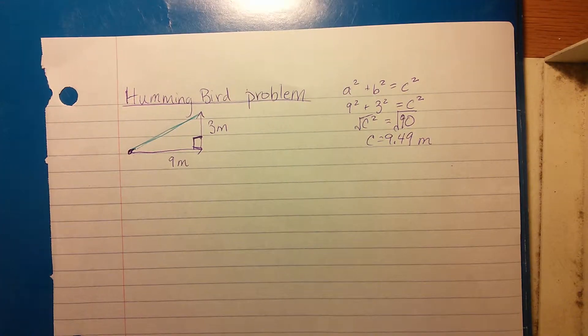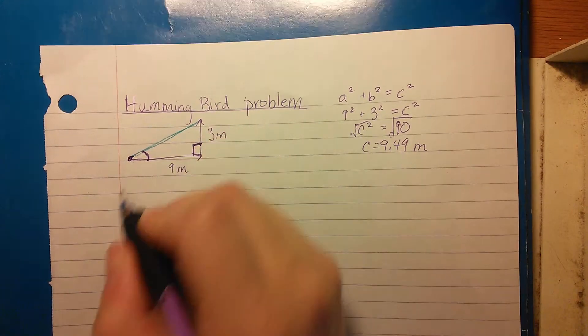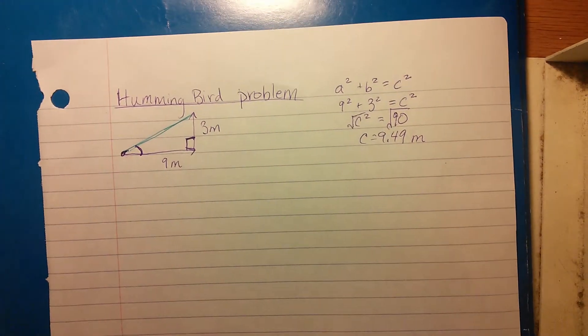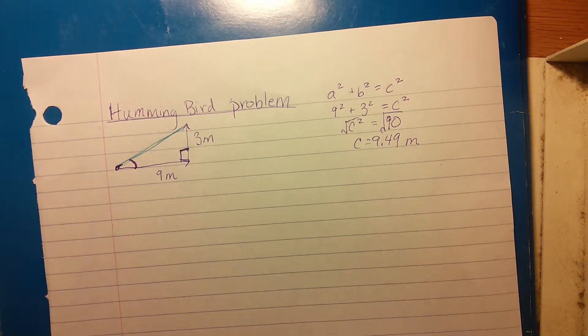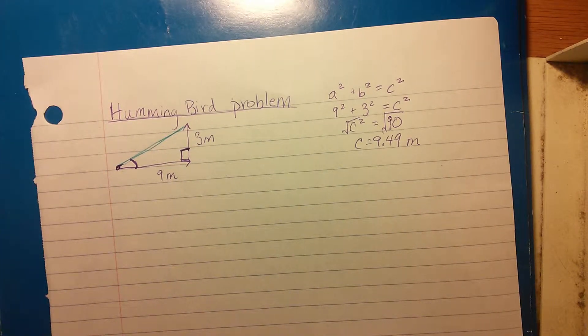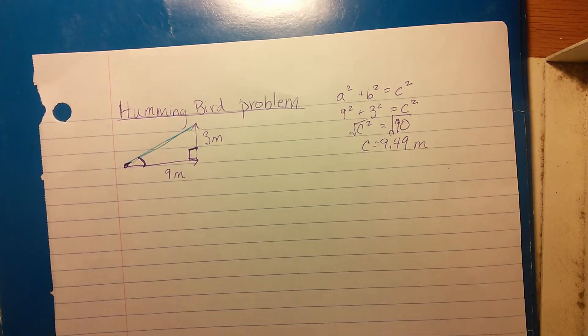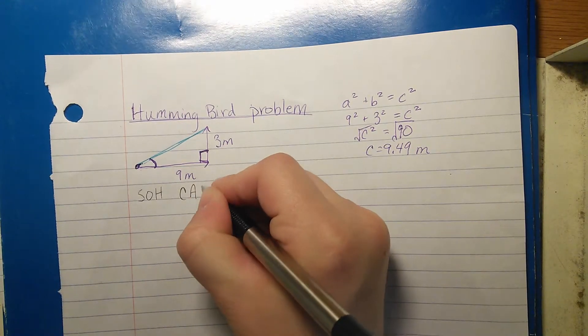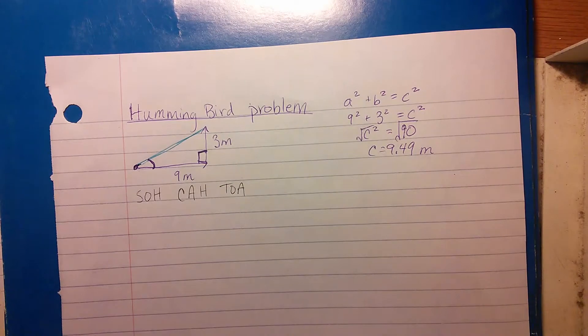However, we also want to know this angle here. Now for that we need to do a bit of trig. Remember the trig functions are sine, cosine, and tangent. Let's see if we can remember what sine, cosine, and tangent is. We can use SOH CAH TOA.